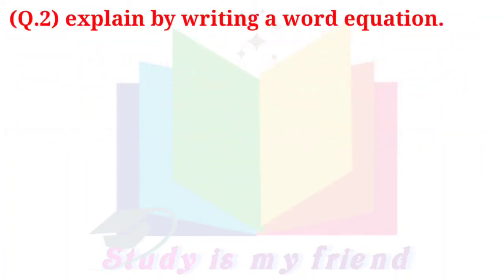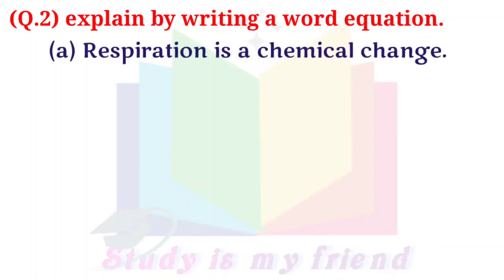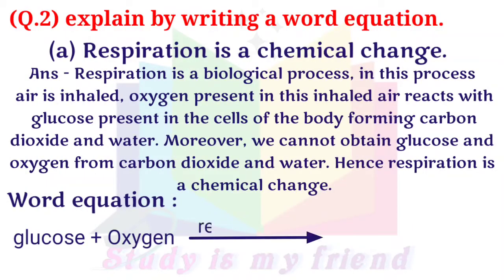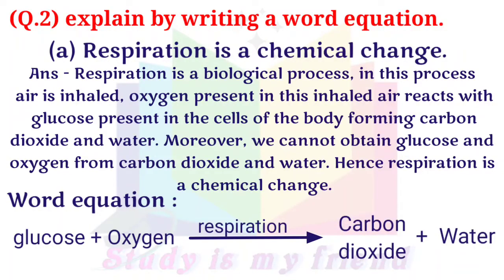Question 2: Explained by writing a word equation. A. Respiration is a chemical change. Answer: Respiration is a biological process. In this process, air is inhaled. Oxygen present in this inhaled air reacts with glucose present in the cells of the body, forming carbon dioxide and water. Moreover, we cannot obtain glucose and oxygen from carbon dioxide and water. Hence, respiration is a chemical change.